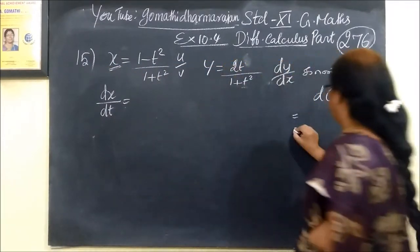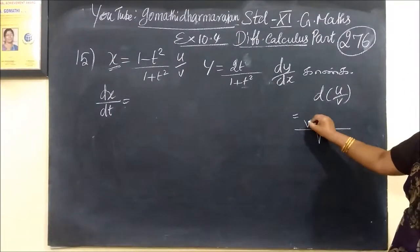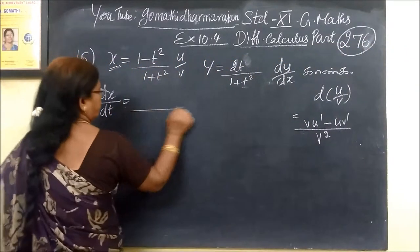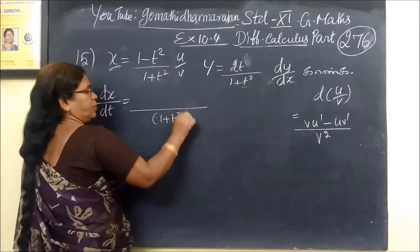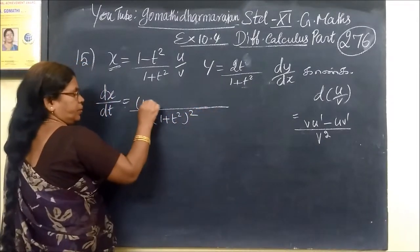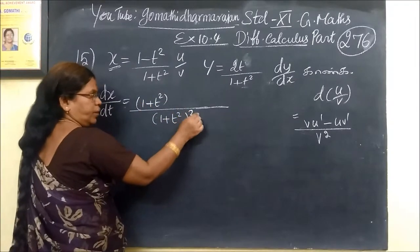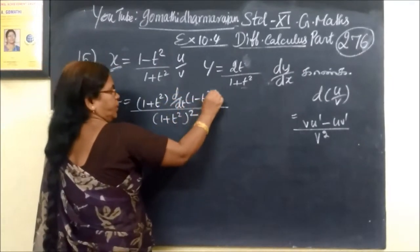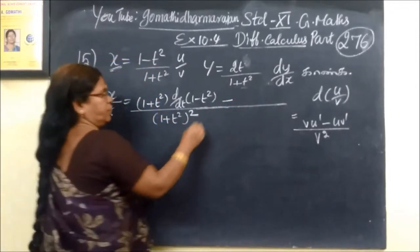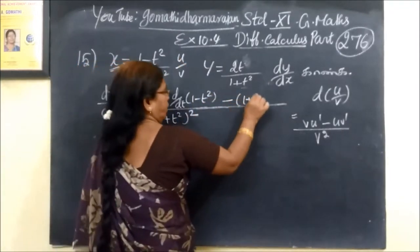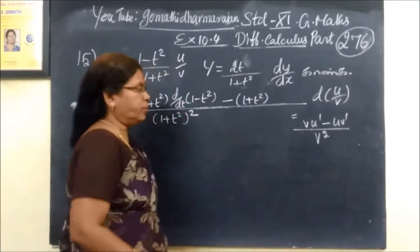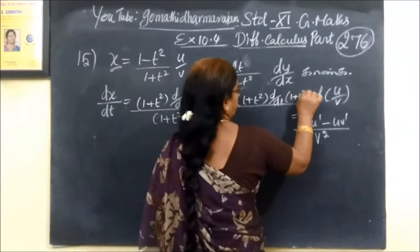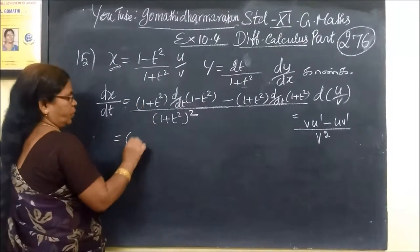This is v squared, then v times u plus or minus u minus. 1 plus t squared is equal to 1 plus t squared. Then we are writing d by dt of 1 plus t squared. So this is equal to 1 plus t squared.